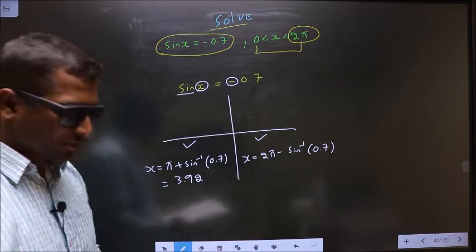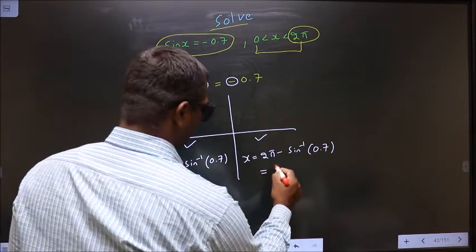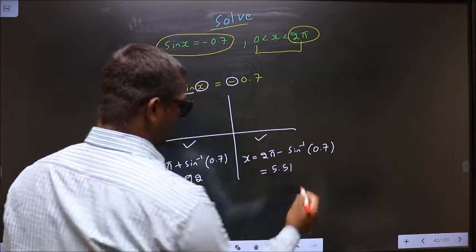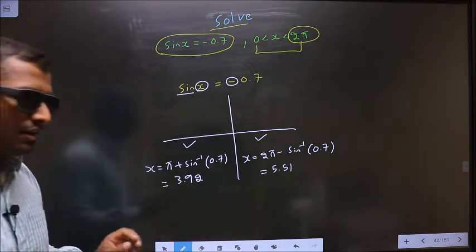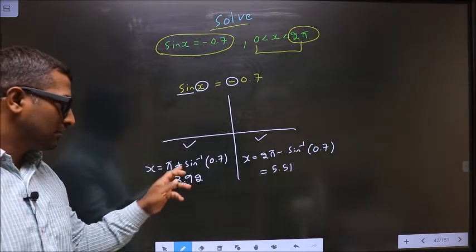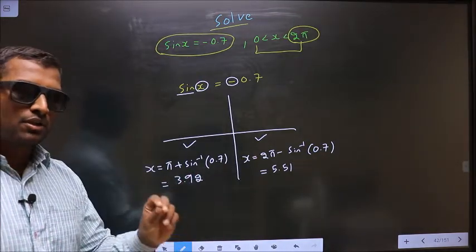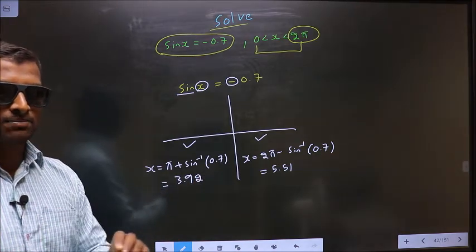Put this in the calculator, you should get 5.51. I repeat, before calculating this, put your calculator in radians mode.